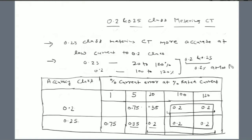Both 0.2 and 0.2S class CT have 0.2% current error at 100% and 120% of rated current, but 0.2S class CT has higher accuracy even at lower values of current. So 0.2S class CT accuracy is better compared to 0.2 class CT, and that is the reason for tariff metering and revenue metering we use 0.2S class CT compared to the 0.2 class CT.